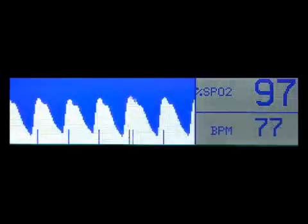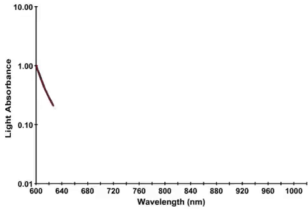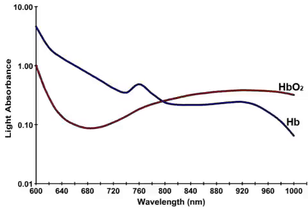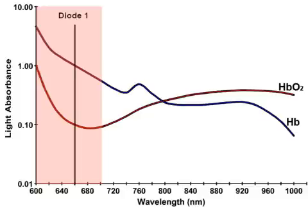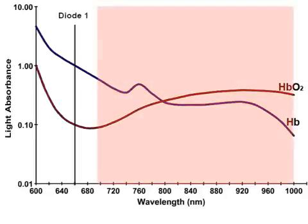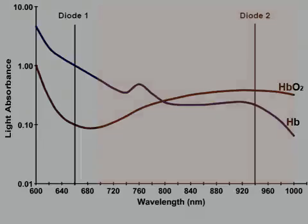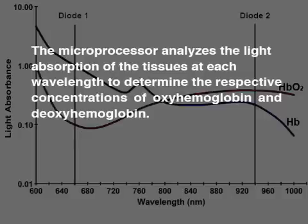The microprocessor calculates the percentage of oxyhemoglobin and displays the hemoglobin oxygen saturation in arterial blood, a waveform corresponding to the pulsatile flow in arterial vessels, and the heart rate. Pulse oximeters function on the principle that oxygenated and deoxygenated hemoglobin absorb red and infrared light differently. The light absorption of deoxyhemoglobin is greater at wavelengths of 600 to 800 nanometers, while the light absorption of oxyhemoglobin is greater at wavelengths of 800 to 1,000 nanometers. One light-emitting diode emits light in the red spectrum at a wavelength of 660 nanometers, at which the light absorption of deoxyhemoglobin is greater than that of oxyhemoglobin. The other diode emits light in the infrared spectrum at a wavelength of 940 nanometers, at which oxyhemoglobin absorbs more light than deoxyhemoglobin. The microprocessor analyzes the light absorption of the tissues at each wavelength to determine the respective concentrations of oxyhemoglobin and deoxyhemoglobin.